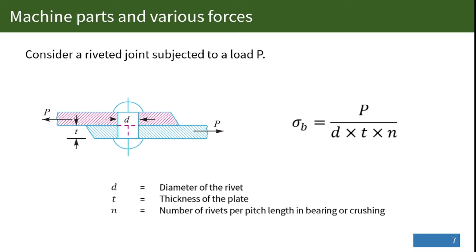Where P is the force applied to the plates, d is the diameter of the rivet, t is the plate thickness, and for multiple rivets, N is the number of rivets per pitch length.